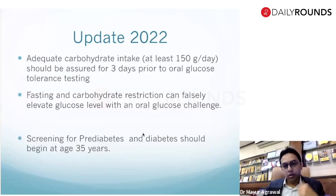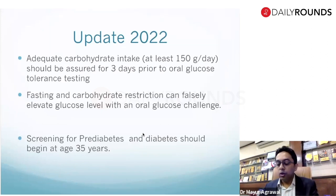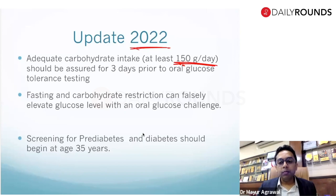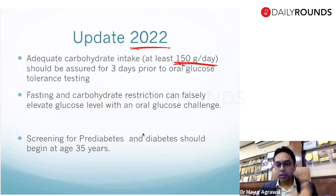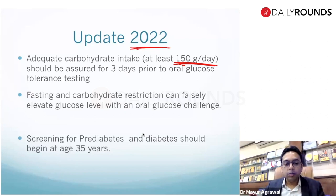What are the updates in 2022? Initially there was no criteria specifying how OGTT should be performed, but now they have included that at least 150 grams per day of carbohydrate intake should be present prior to performing the OGTT in the prior three days. Otherwise, if the patient is restricting carbohydrates, that can falsely elevate glucose in the OGTT, leading to a false diagnosis of pre-diabetes or diabetes.